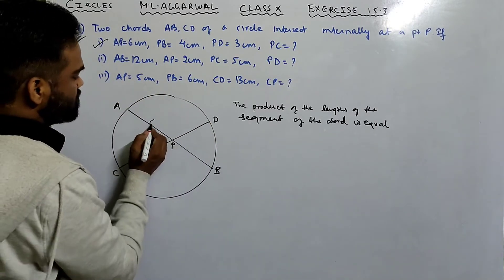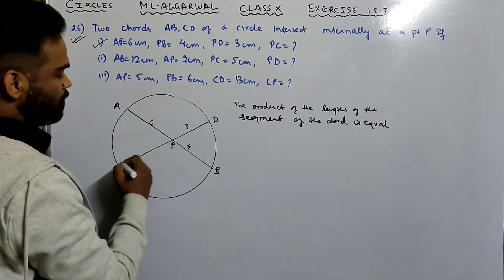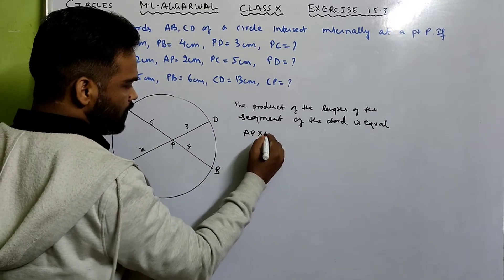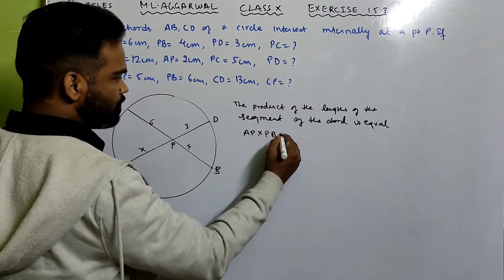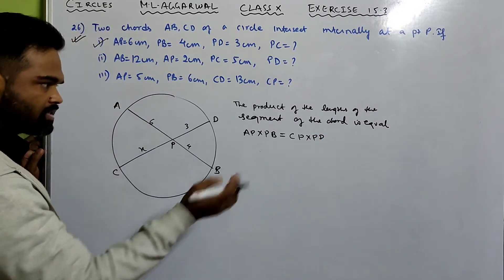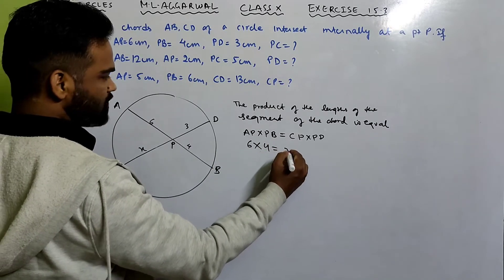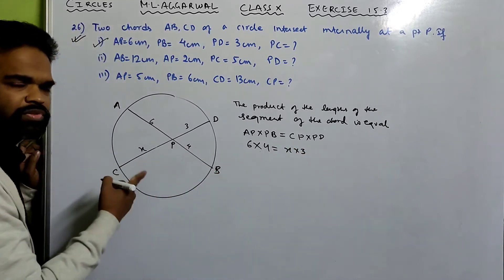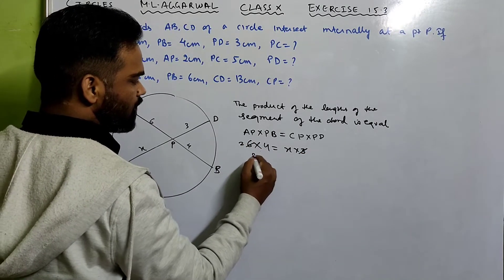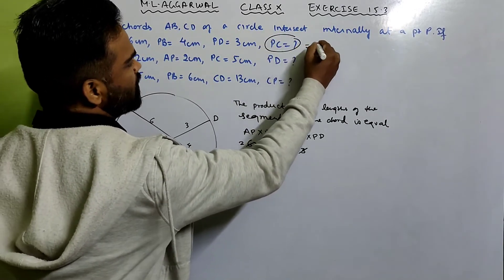Part 1: AP is 6 cm, PB is 4 cm, PD is 3 cm. Let PC = X. According to the theorem, AP × PB = CP × PD. Substituting: 6 × 4 = X × 3, giving 24 = 3X, so X = 8 cm. Therefore PC = 8 cm.